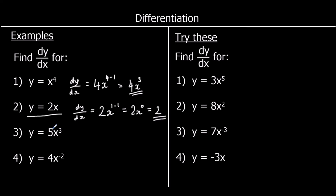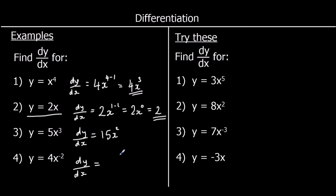Number 3: y equals 5x cubed. dy/dx — times by the power: 3 times 5 is 15, then take one off the power — 3 take away 1 is 2 — so dy/dx is 15x squared. Number 4: times by the power, so negative 2 times 4 is negative 8, then take one off the power — negative 2 take away 1 is negative 3 — so dy/dx is negative 8x to the power of negative 3.